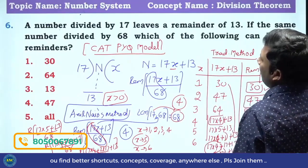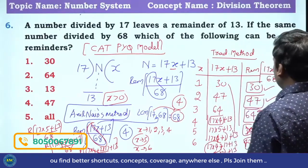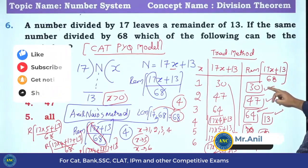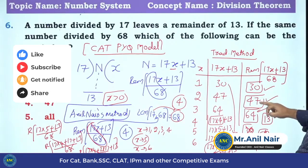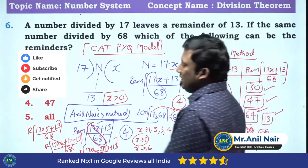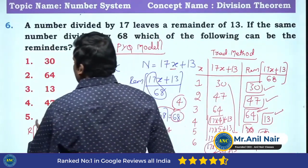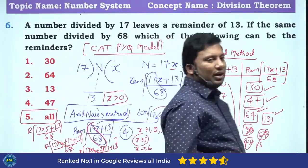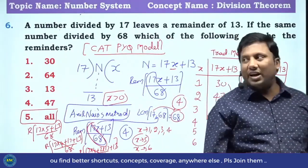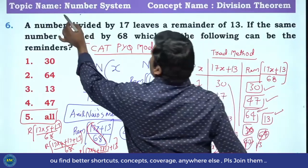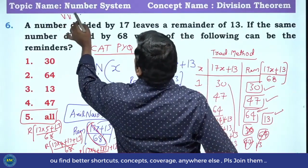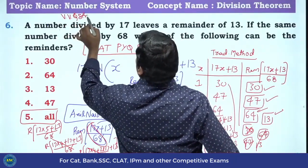Which of the following can be the remainders? The answer: there are 4 possible remainders — 30, 47, 64, and 13. This is a very good question — please put a star mark on this question.